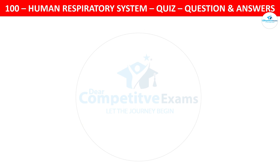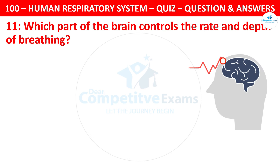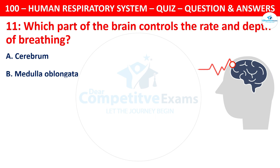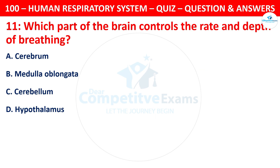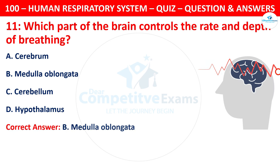Question 11. Which part of the brain controls the rate and depth of breathing? Your options are: cerebrum, medulla oblongata, cerebellum, or hypothalamus. The correct answer is B, medulla oblongata.